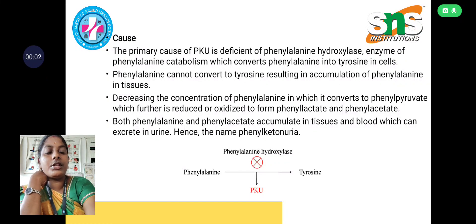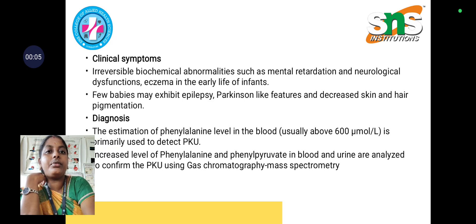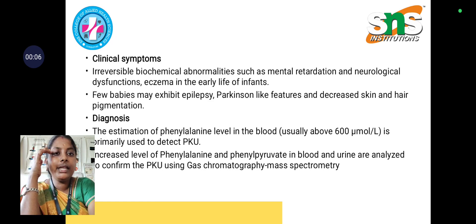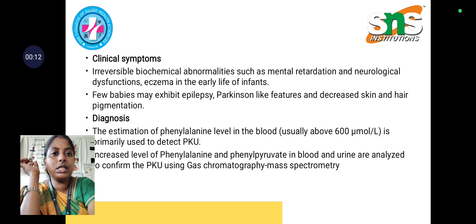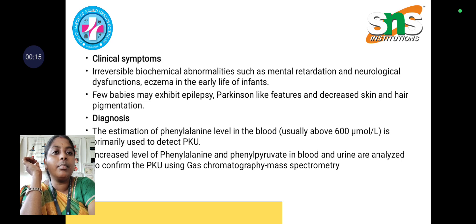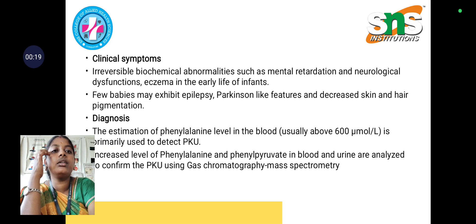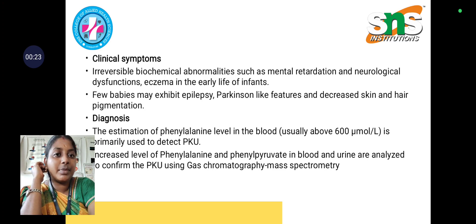Continuing with the causes of phenylketonuria, moving to the clinical symptoms: the irreversible biochemical abnormalities include mental retardation and neurological dysfunctions, eczema in early life of infants, and a few babies may exhibit epilepsy.